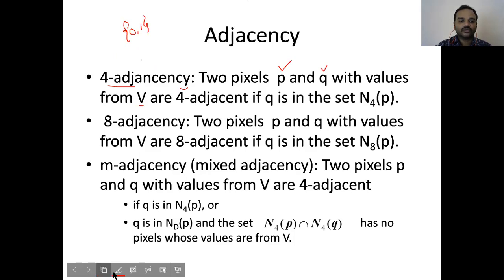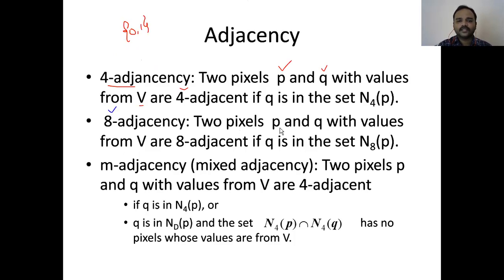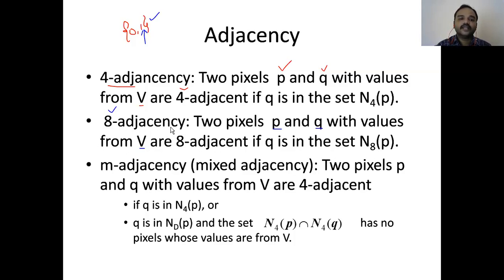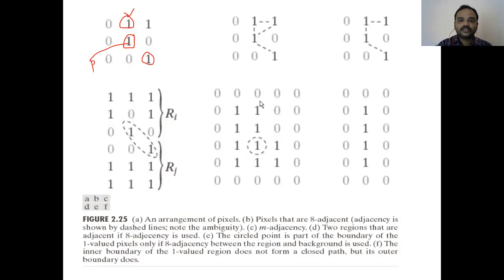Next we will talk about eight-adjacency. Two pixels p and q with values from V — again I will consider it to be a binary image with value 1 — are eight-adjacent if q is in the set of eight-neighbors of p. The eight-neighbors include pixels in the horizontal, vertical, and diagonal directions. If q is in the eight-neighbors of p then we call those pixels eight-adjacent.